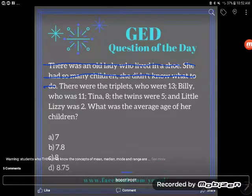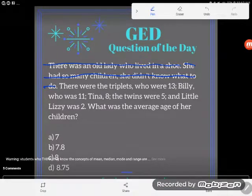Okay, there were the triplets who were 13, this seems important I'm getting some numbers. Billy who was 11, Tina 8, the twins were 5, and little Lizzie was 2. What was the average age of her children?